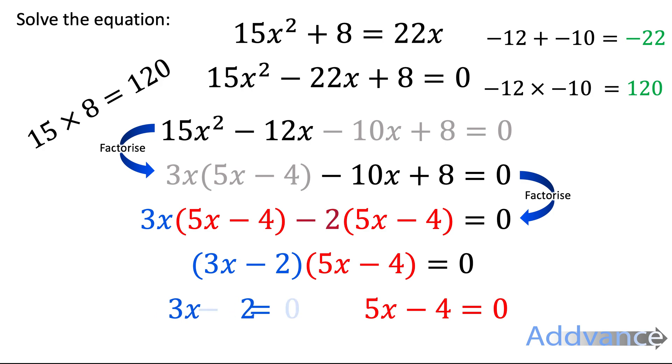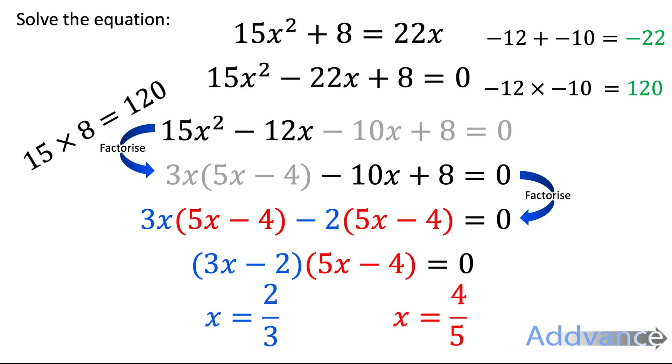We'll start with the blue one. We're going to add 2 to both sides. Then we're going to divide by 3 and we get x equals 2 thirds. Now, with the red one, we're going to add 4 to both sides and divide by 5 and get x equals 4 fifths. And those are the final answers.